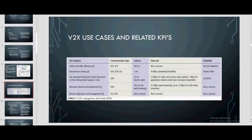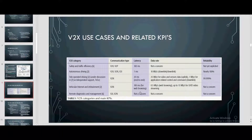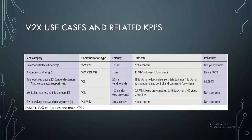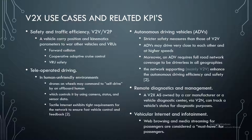For this table, V2X use cases are related to specific KPIs. We will explain why each V2X category has certain values of latency, data rate, and reliability. For safety and traffic efficiency in V2V/V2P, a vehicle carries position and kinematics parameters to warn other vehicles and vulnerable road users, such as forward collision warning, cooperative adaptive cruise control, and pedestrian safety. For teleoperated driving in human-unfriendly environments, drones on wheels may be commanded to self-drive by an off-board human controlling camera, status, and sensor data. Tactile Internet exhibits tight requirements for the network to ensure fast vehicle control and feedback.